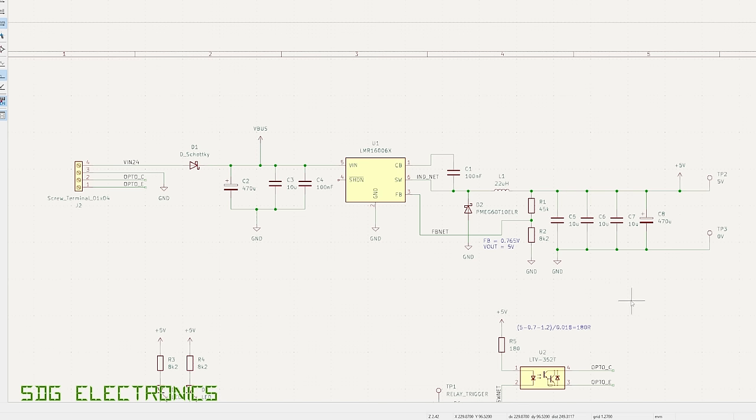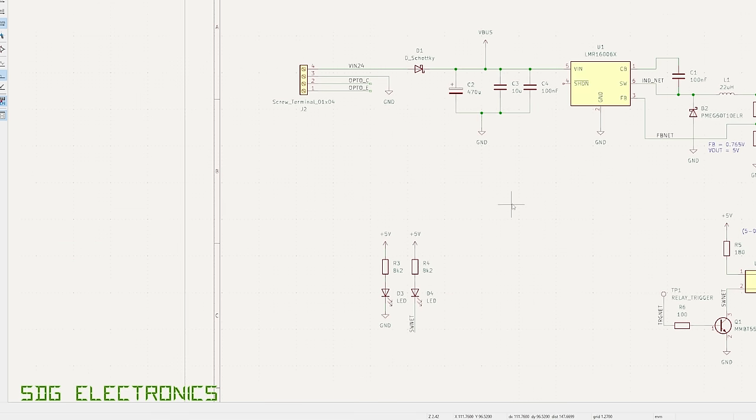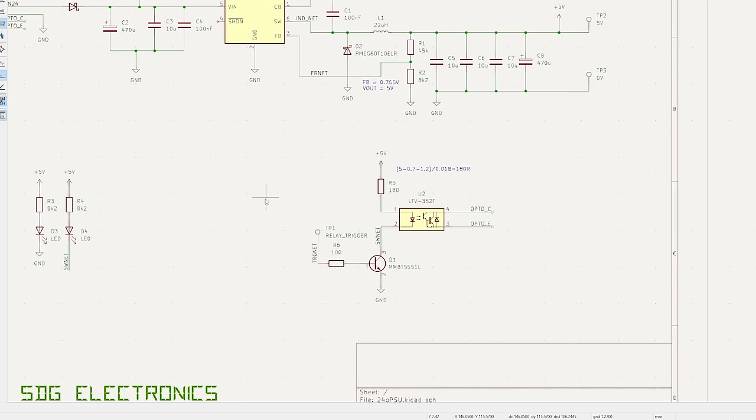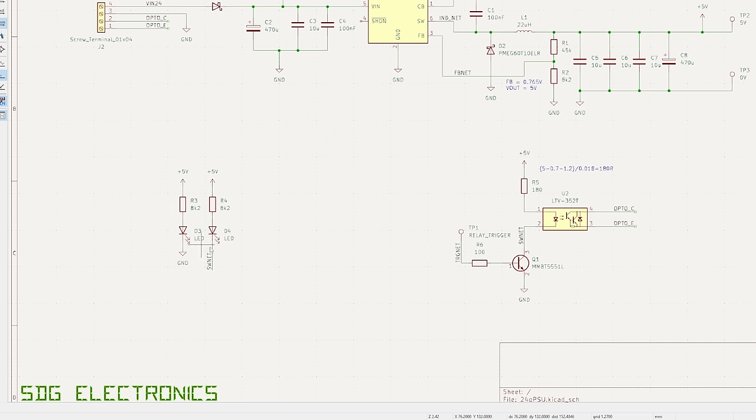Then we've got an optocoupler, the LTV352T, that is fed from that pad on the board to an MMBT5551, which is exactly what was used on the previous design with the relay. Instead we've got an optocoupler and a current limiting resistor, and we're using the darlington output to go directly onto the outputs to that terminal. That will work quite happily with my circuit. We've also got a back EMF diode for protection if you're switching some other kind of load. The only other thing is a couple of status LEDs. That's the schematic, I've checked over it a few times.